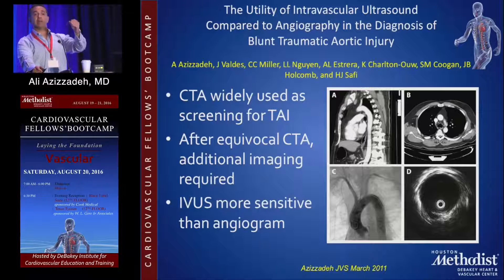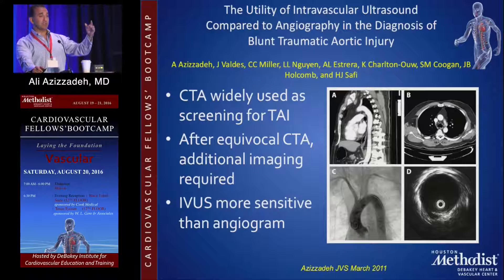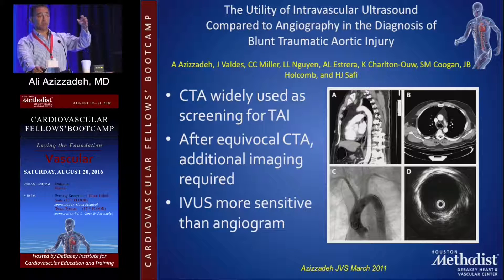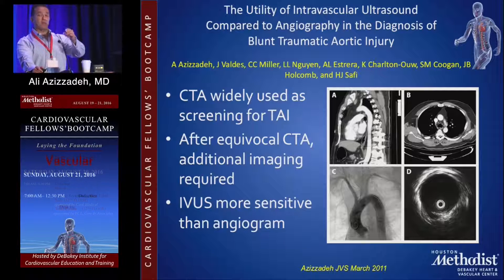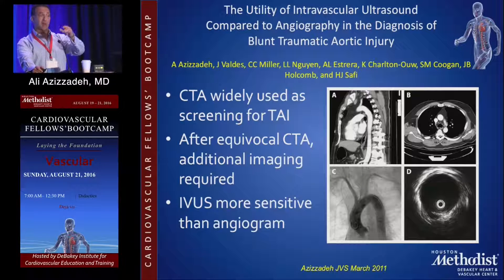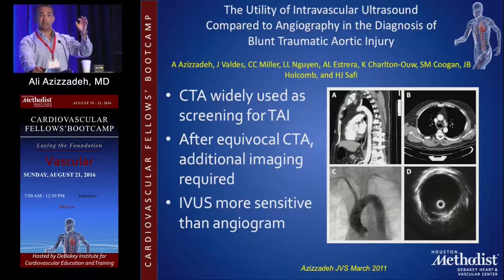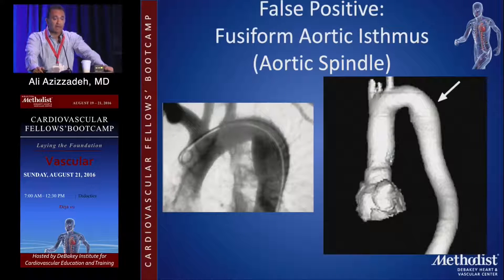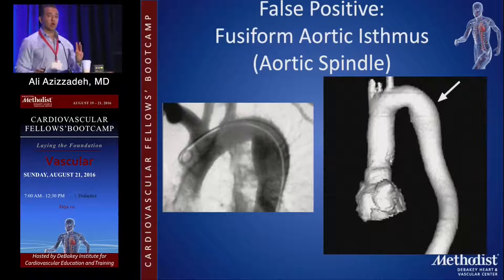We did a study where we compared intravascular ultrasound to angiogram in patients who had minor aortic injury — when the CT scan comes back and the radiologist says 'cannot rule out aortic injury.' We took those patients and did both an angiogram and an IVUS on all of them. IVUS was more sensitive for patients who have minor aortic injuries compared to angiogram, because a lot of times you can't see minor tears on an angiogram.